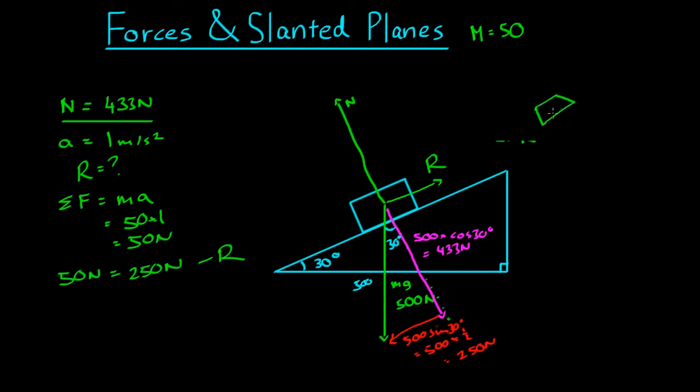So I'm saying there's a block here, has one force going this way, one force going this way, but the net force has to be 50 newtons down the plane. And this gives us, if we take 250 from both sides, that's negative 200 equals negative R. Resistance equals 200 newtons.